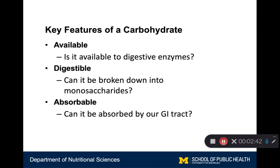So how quickly the carbohydrate gets broken down into monosaccharide, and how efficiently that monosaccharide can get trafficked into our blood, affects how quickly that carbohydrate enters our bloodstream. Take a minute and think about a common food that contains carbohydrates that you eat, and think about it across these three dimensions: how available is it, does it need to have some mechanical digestion, is it digestible, and how absorbable are the individual units?